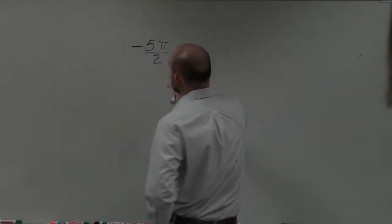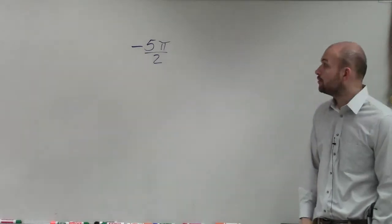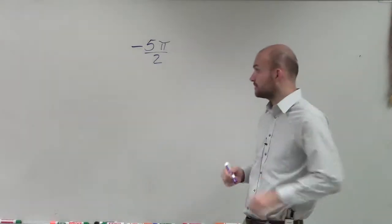So in this example, what I have is negative 5π over 2, and what we need to do is determine coterminal angles.